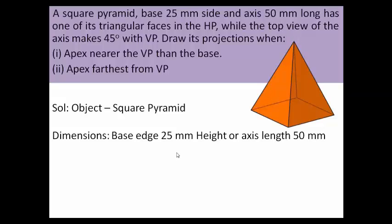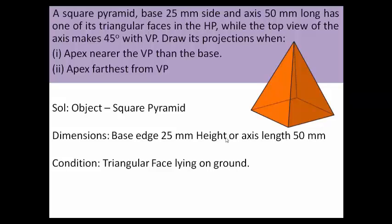The condition says one of its triangular faces is in the HP. This square pyramid has four triangular faces, and one triangular face is going to be grounded — in contact with the horizontal plane. This must be reflected perfectly in the drawing.